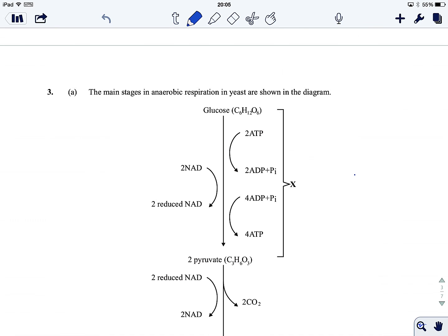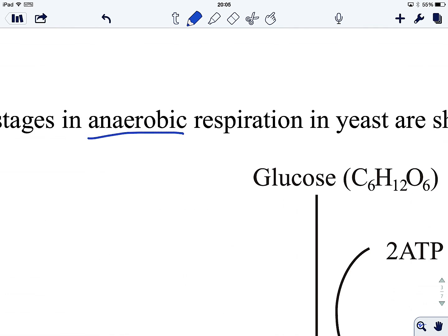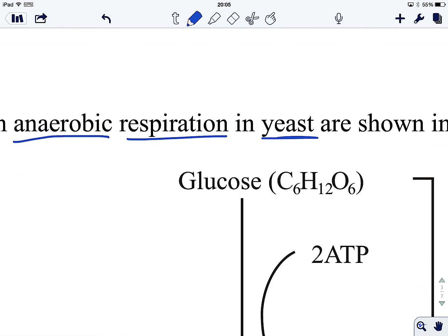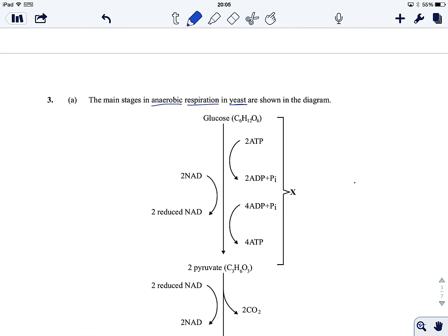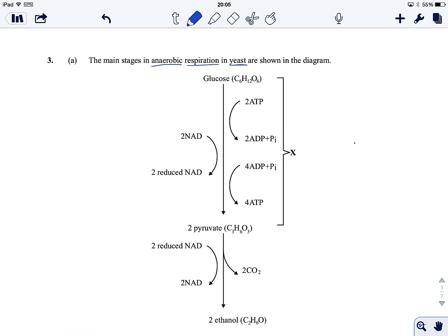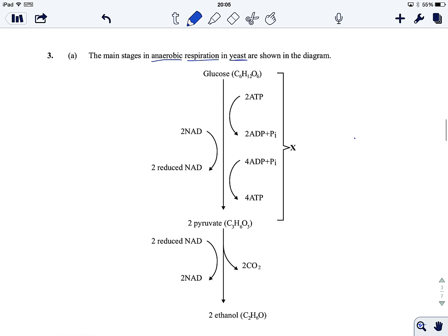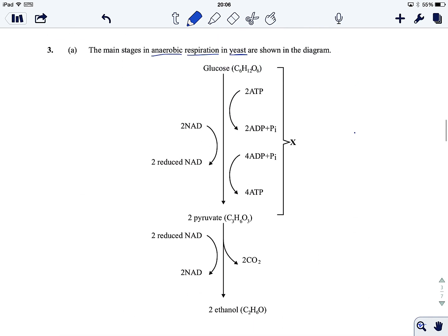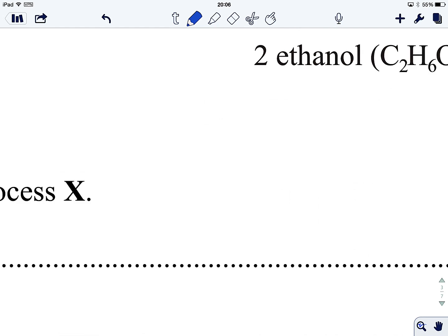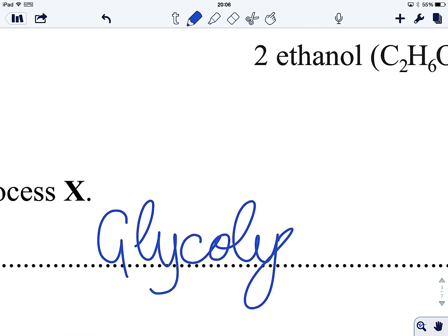First clue. Most students miss this. You've got a spot that is anaerobic respiration and it's in yeast. This will come in handy later. The main stages show glucose to pyruvate, which is glycolysis, we know this, and then pyruvate to ethanol. Name process X, well, we've already identified. If something starts with glucose and ends with pyruvate, it's got to be glycolysis. Happy days.